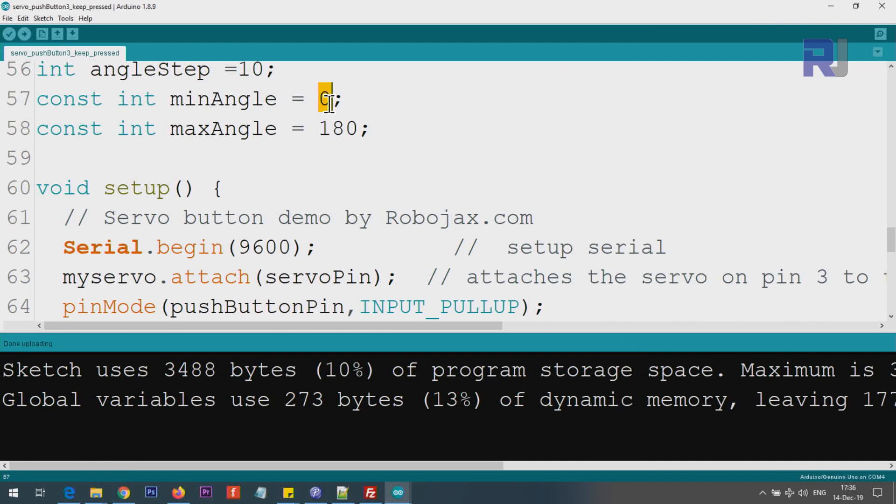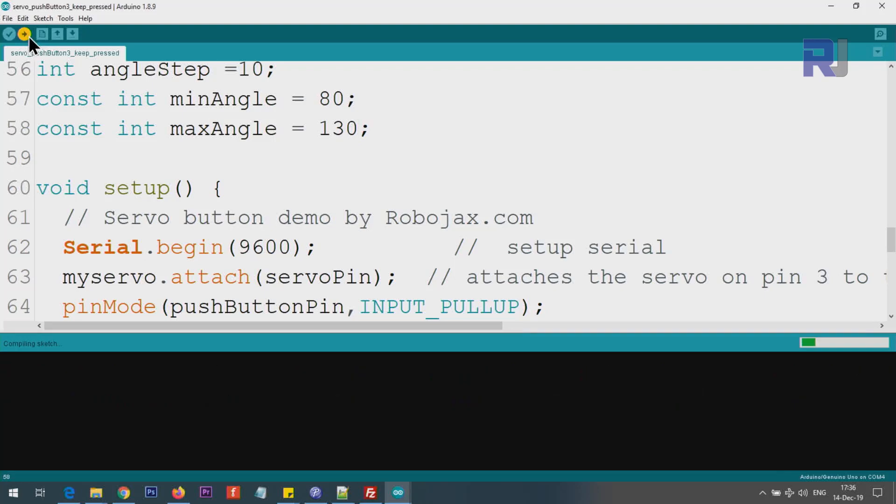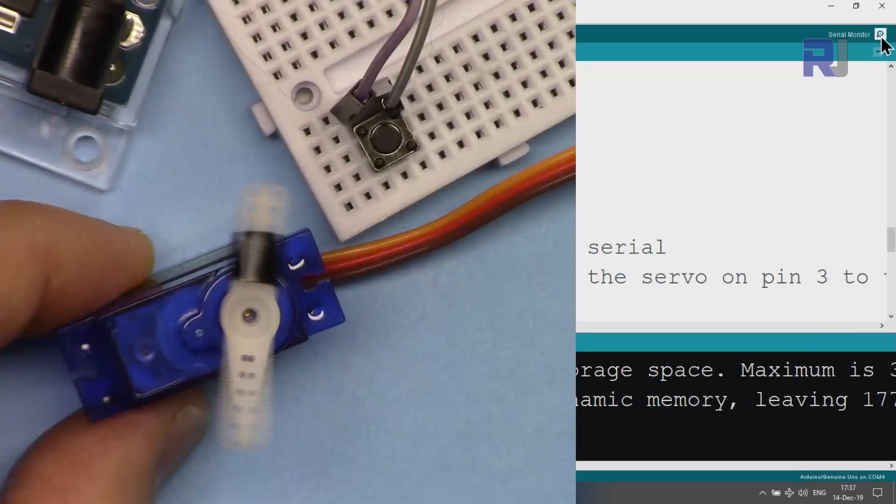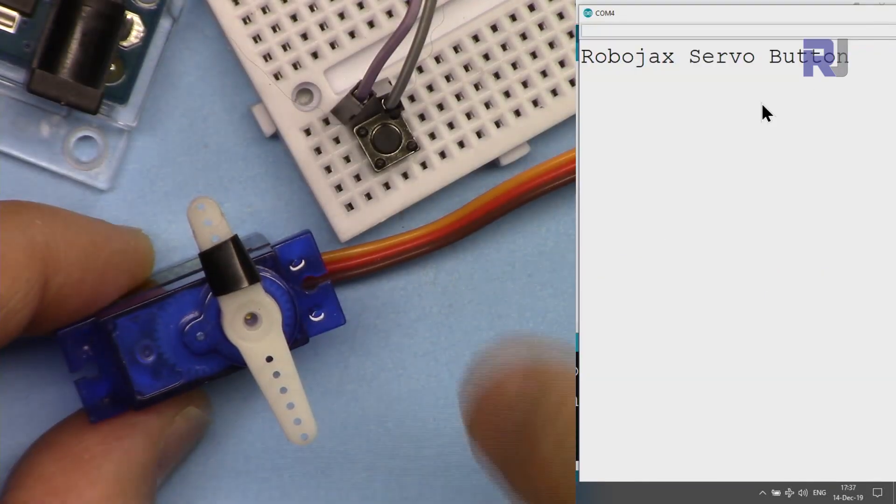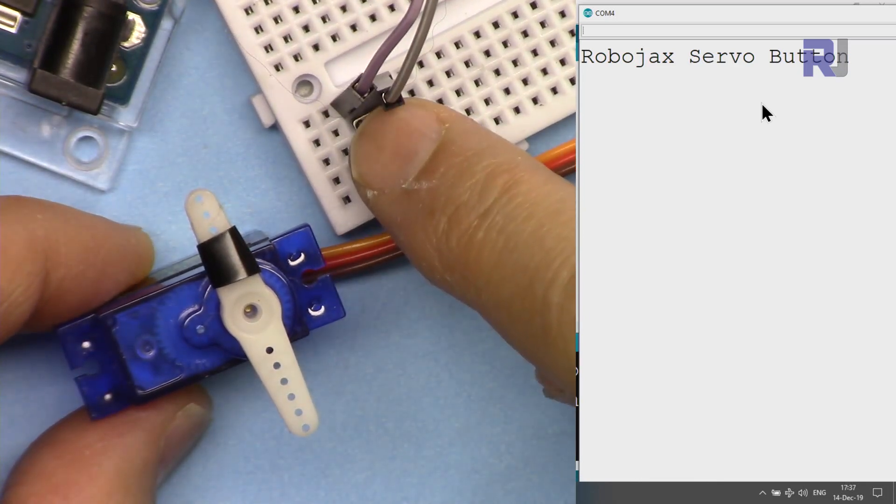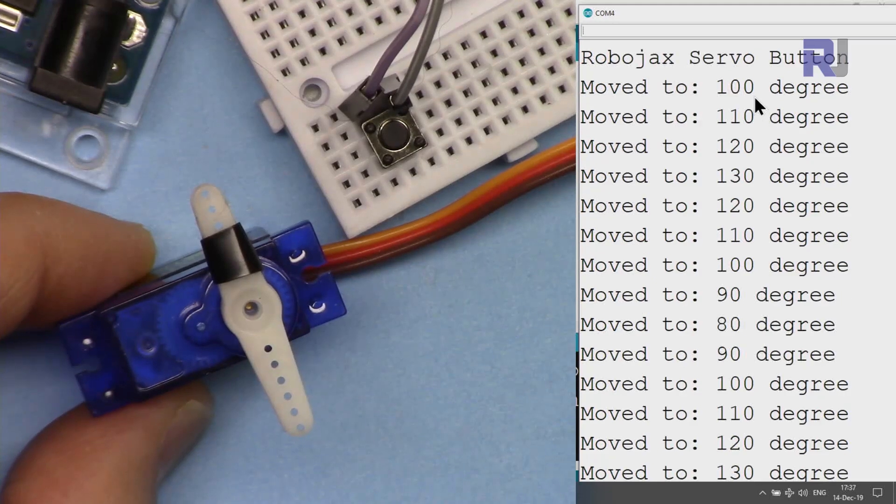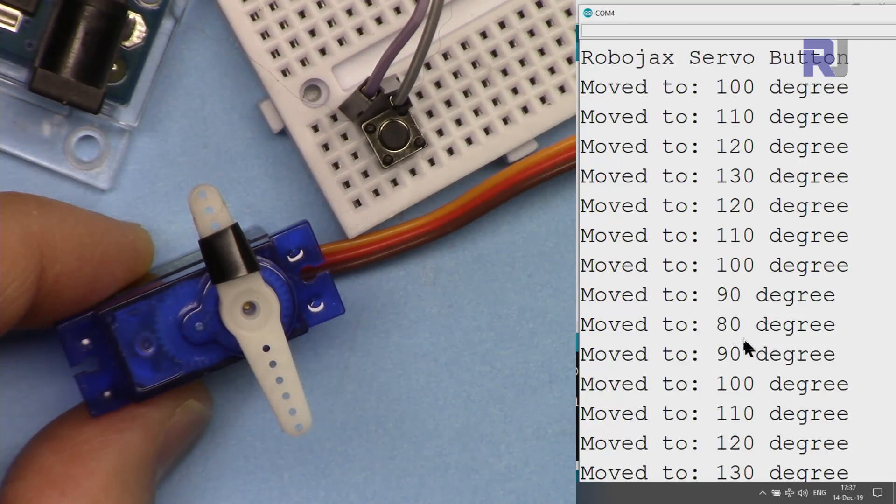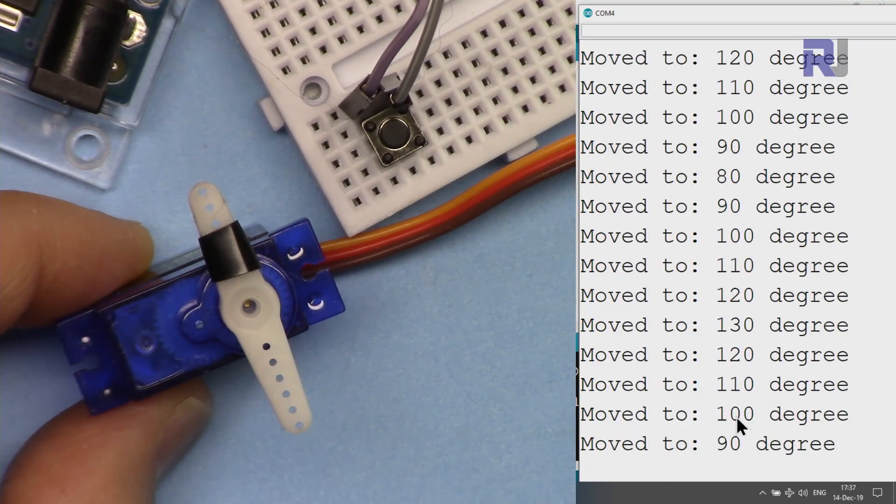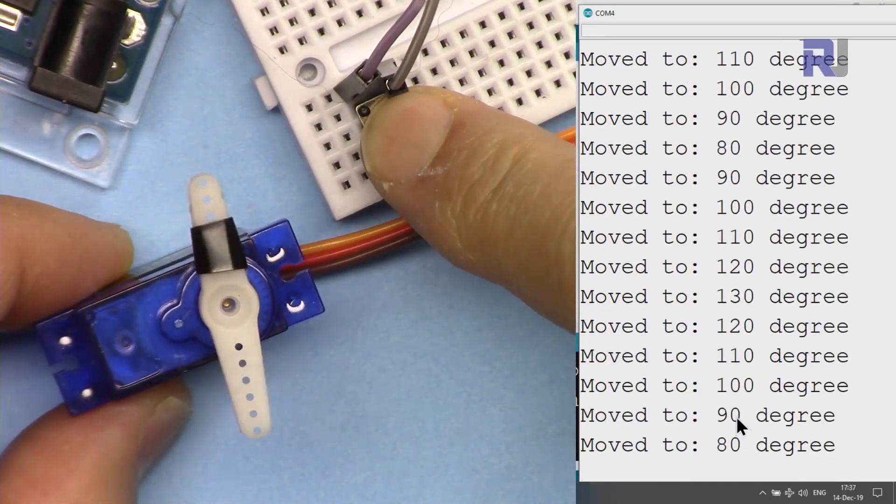If I set this, let's say between 80 and 130, let me upload it. Now this will go within—if I press it you will see that it goes, let's start from 100, 110, and it goes back to 80, and then those values, so it stays within the boundary.